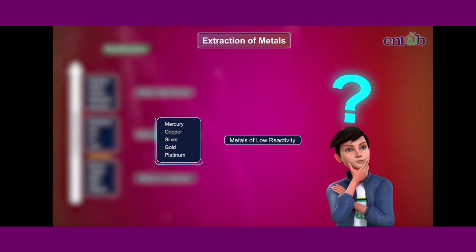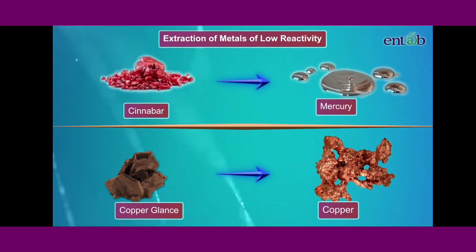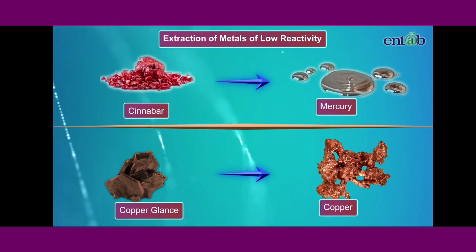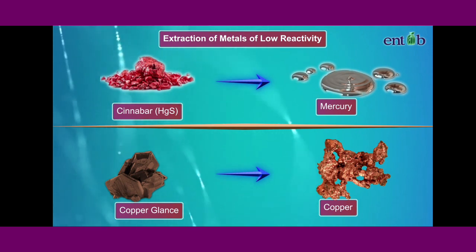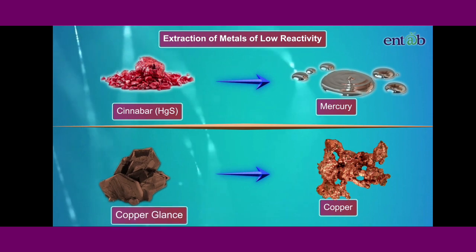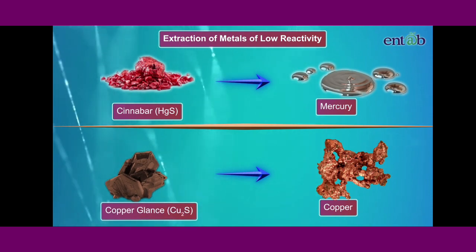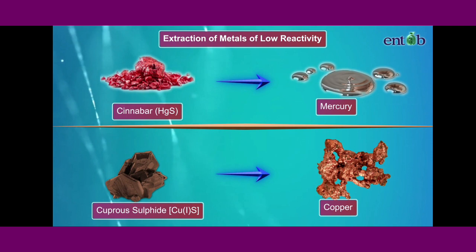Is the same process used to extract the metals that lie low in the reactivity series? Let's take two less reactive metals, mercury and copper. Mercury can be extracted from cinnabar, which is mercuric sulphide or HgS, and copper from Cu₂S or cuprous sulphide.